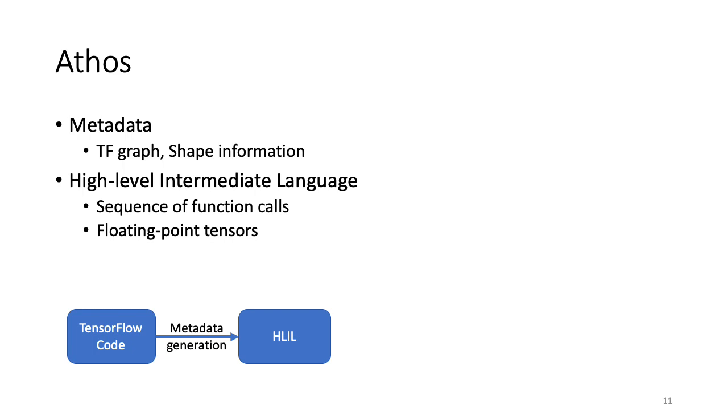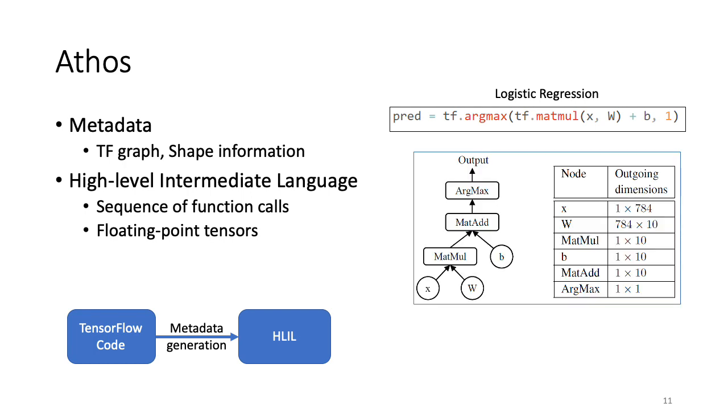Let's look at an example. Consider this piece of code written in TensorFlow for logistic regression. The metadata generated for this TensorFlow code looks like this. On the left side, you see the TensorFlow graph and on the right side, the shape information of all the tensors involved in the computation. In the next step, this metadata is compiled to HLIL shown at the bottom which has a series of function calls over floating-point tensors.